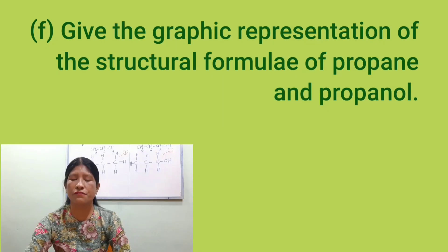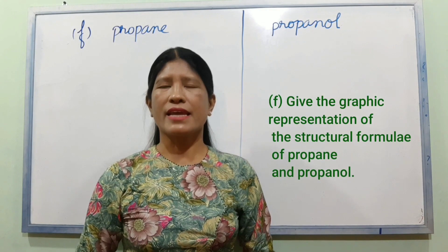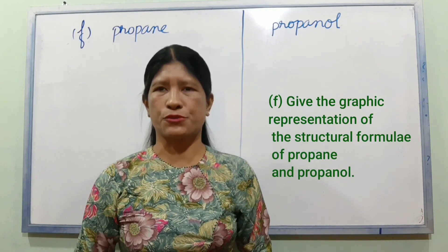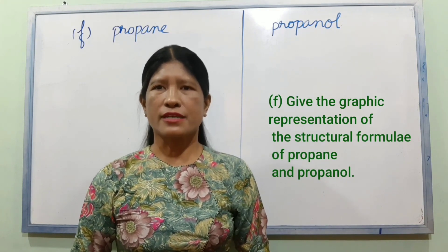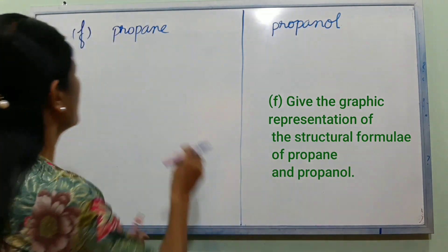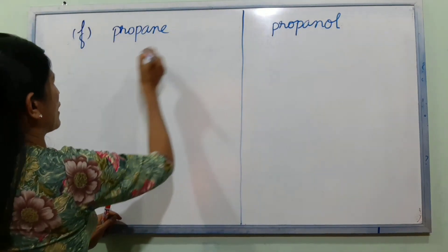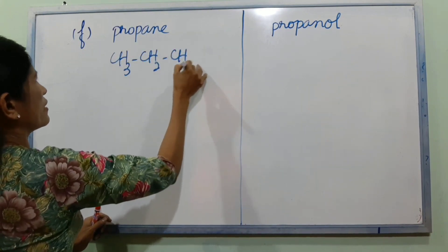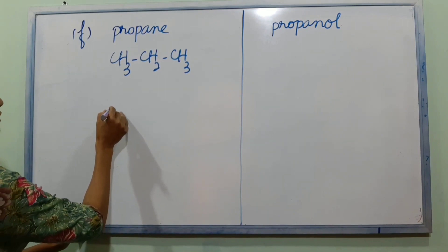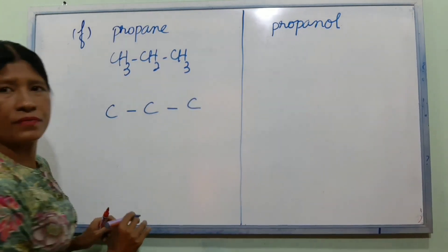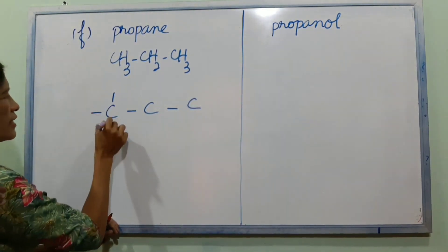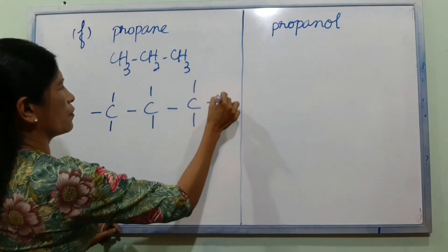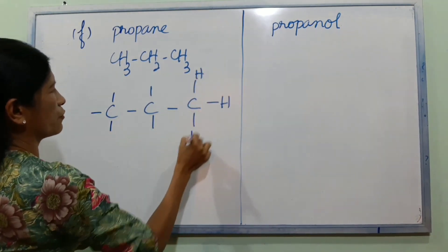Number F: Give the graphic representation of the structural formula of propane and propanol. Propane has the structural formula CH3-CH2-CH3.